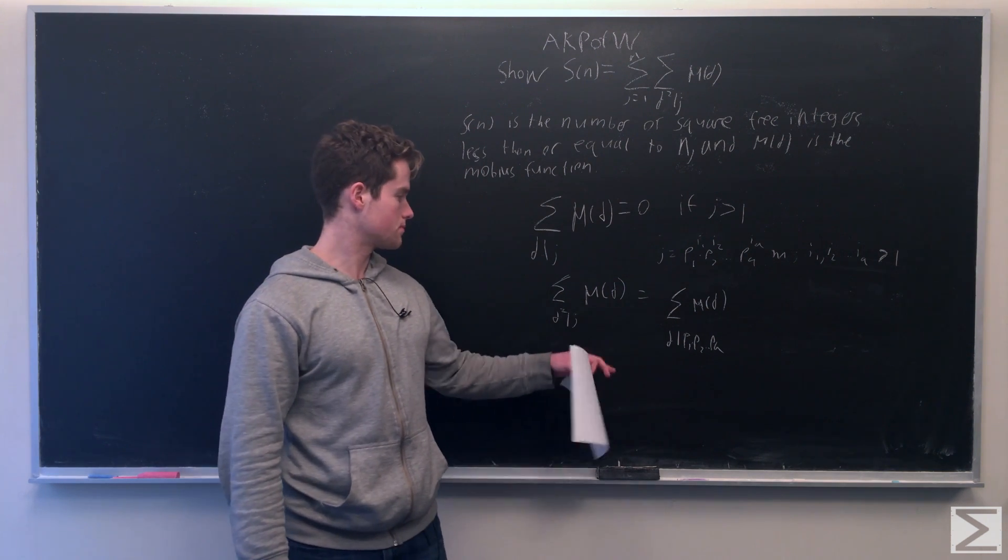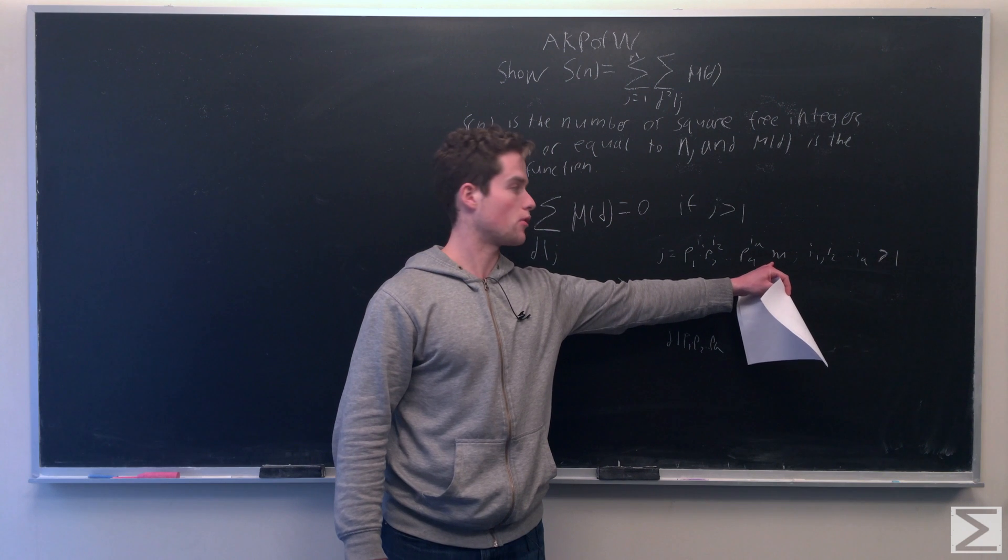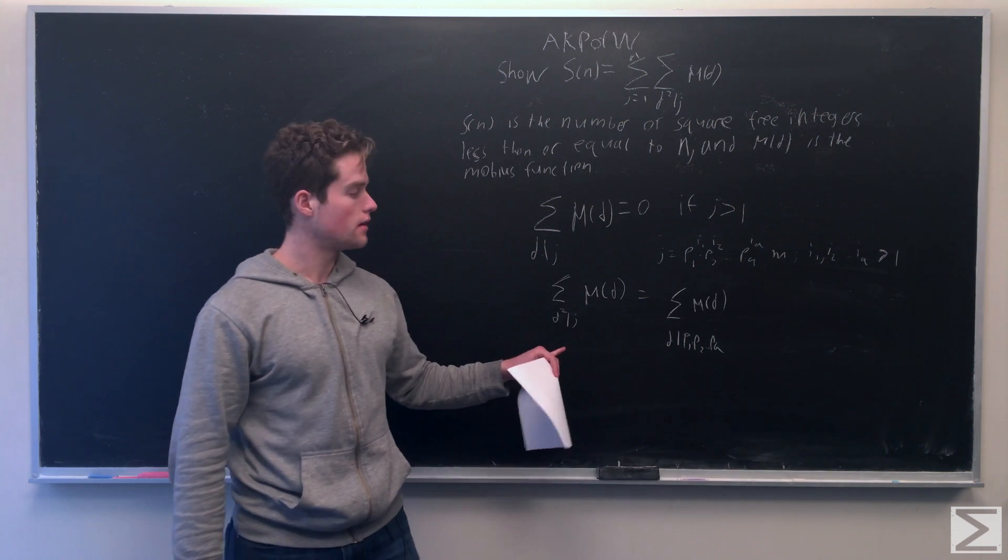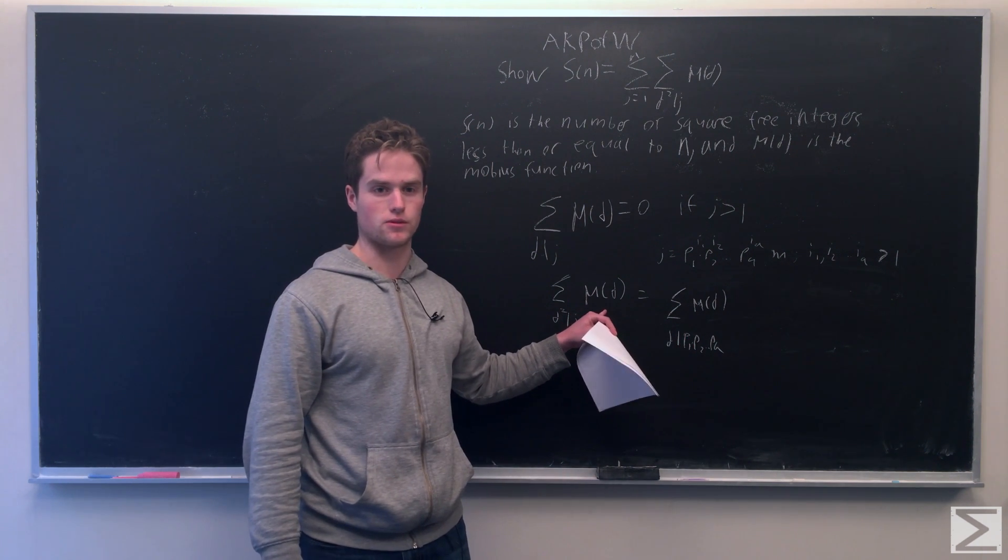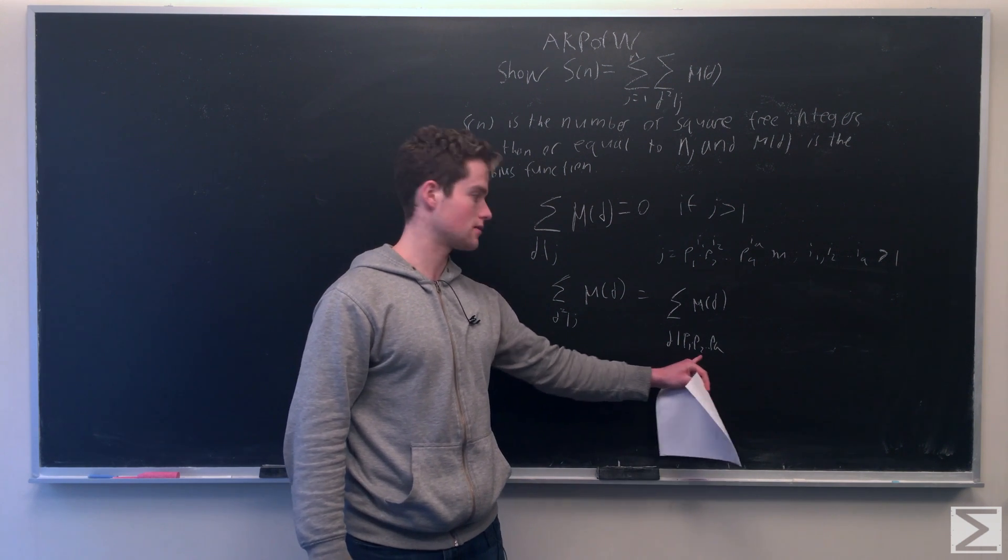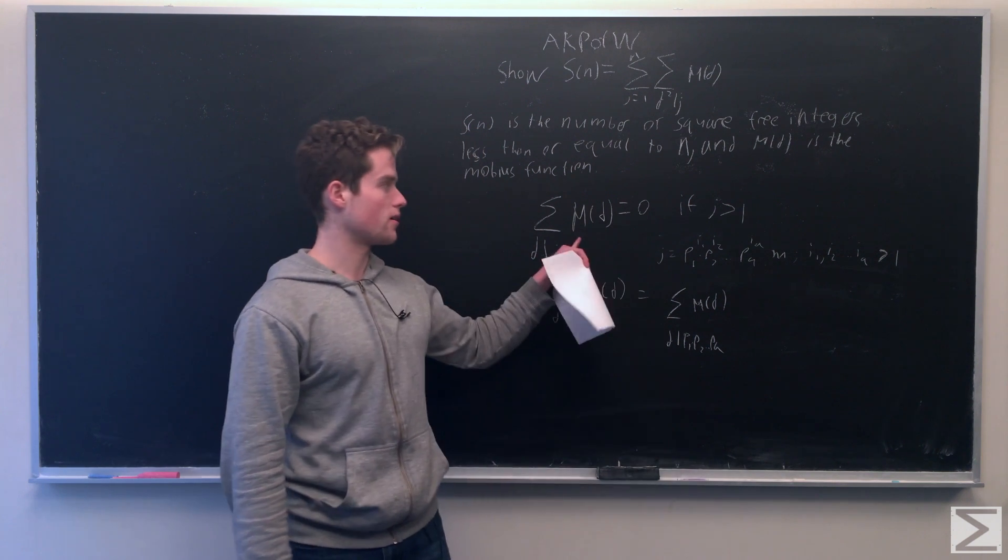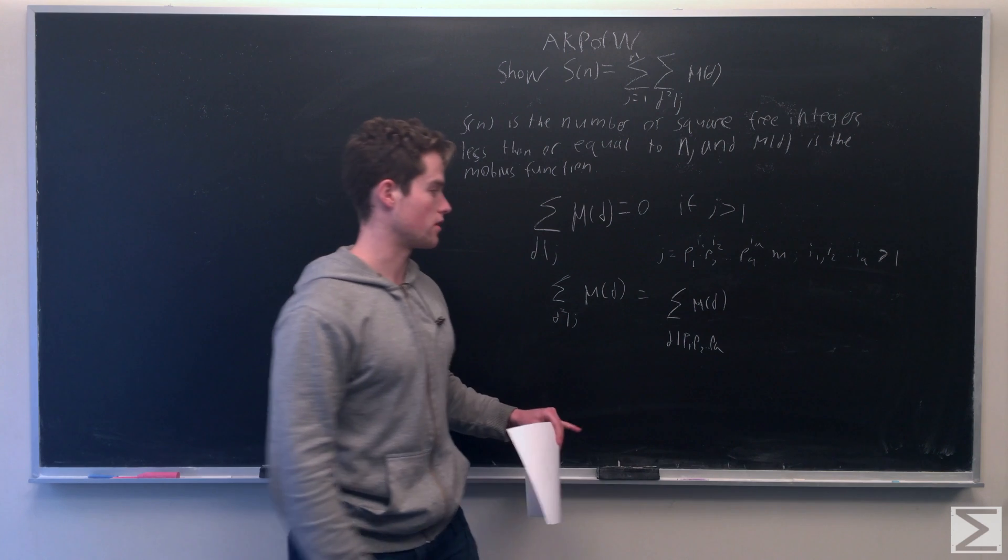So, if d divided any prime part of the square-free part of j, d squared would not divide j, so we're going to ignore that. If d had any power greater than 1, then the Mobius function of it would just be 0, so we're going to ignore that. So we really just want the divisors of this product, p1 times p2, all the way to p_a. But from our identity we proved up here, we know this is just going to equal 0.